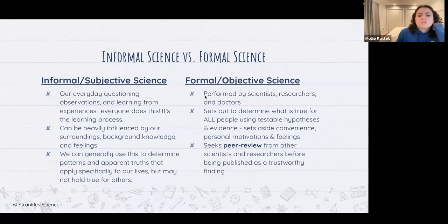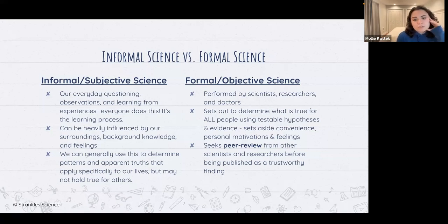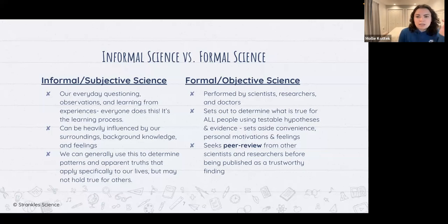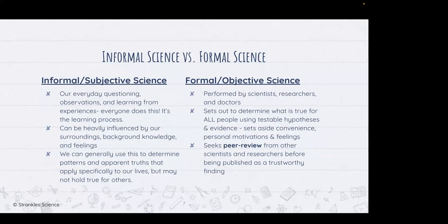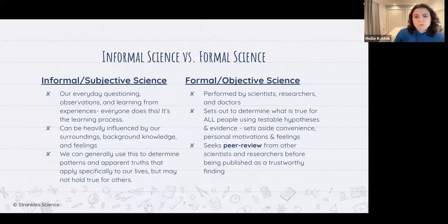Formal objective science is performed by scientists, researchers, and doctors, and it sets out to determine what is true for all people using testable hypotheses and evidence. It sets aside convenience, personal motivation, and feelings. The key thing is it seeks peer review from other scientists before being published as a trustworthy finding. If a scientist comes up with a conclusion, they have to write a detailed report of exactly how they took every data point, submit it to a scientific journal, and it can't be published until other scientists replicate the exact same experiment and get the same results. It's really hard to get a science article published.